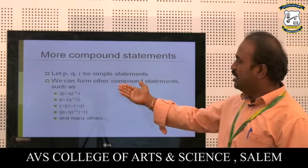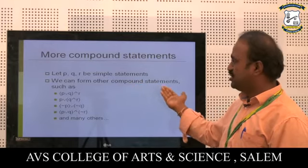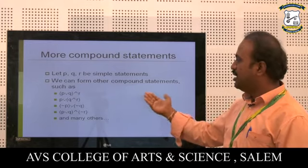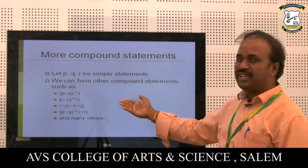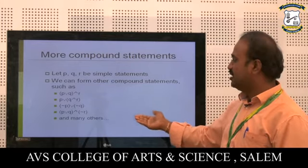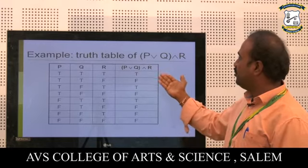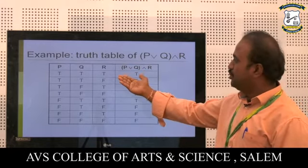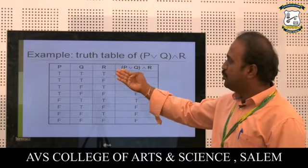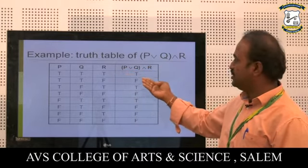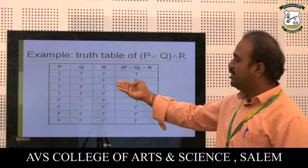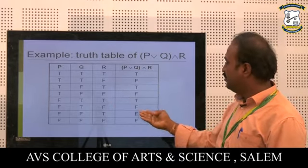More compound statements: Let P, Q, R be simple statements. We can form compound statements such as P XOR Q and R, P XOR Q and R, negation-P or negation-Q, and P XOR Q and negation-R. The truth table for P XOR Q and R is built by listing all combinations of P, Q, and R values and computing results accordingly.